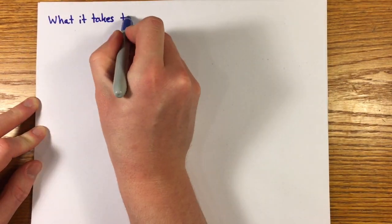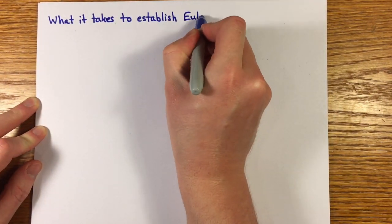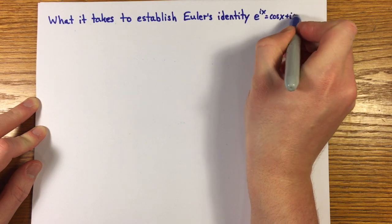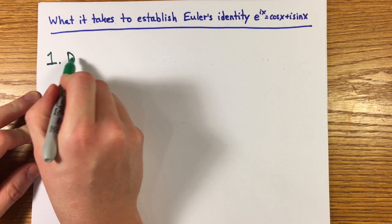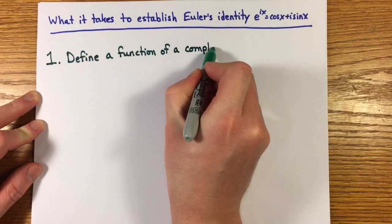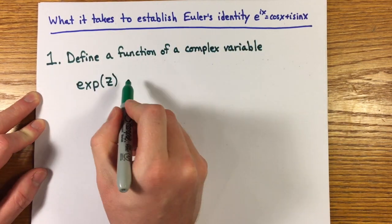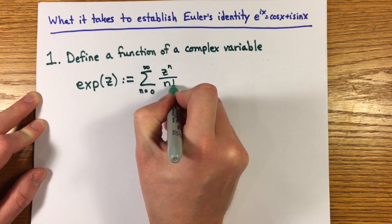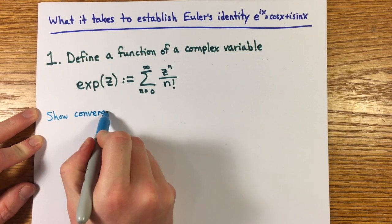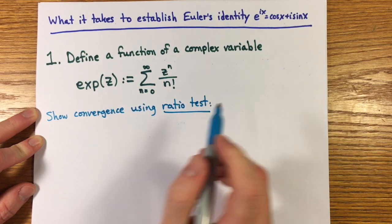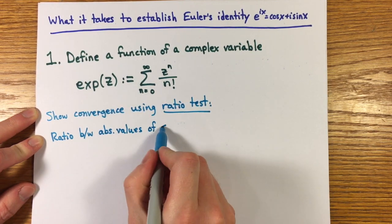So let's discuss what goes into a proof of Euler's identity. I don't want to go through all the details, but I want to make clear all of the steps. The most common proof of Euler's identity begins by extending the exponential function to complex arguments by defining exp(z) = sum from n=0 to infinity z^n/n!, which is the ordinary Taylor series for the real function e^x.